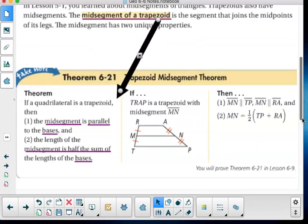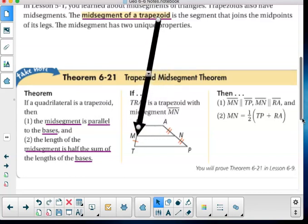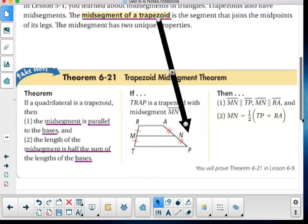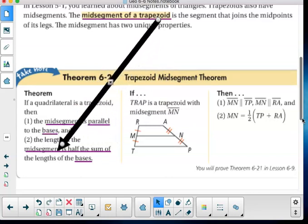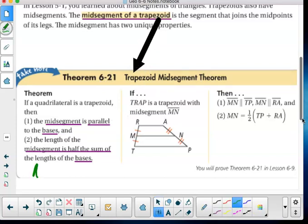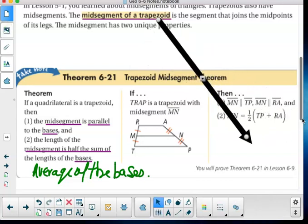If the quadrilateral is a trapezoid, then the mid-segment is parallel to the bases, just like it was for triangles. So the mid-segment here that connects the two midpoints is parallel to these two bases that are also parallel to each other. And the length of the mid-segment is half the sum of the lengths of the bases. Half the sum is the average of the bases. So I take the average of those two bases, and I have the length of the mid-segment. And that's what this says right here.